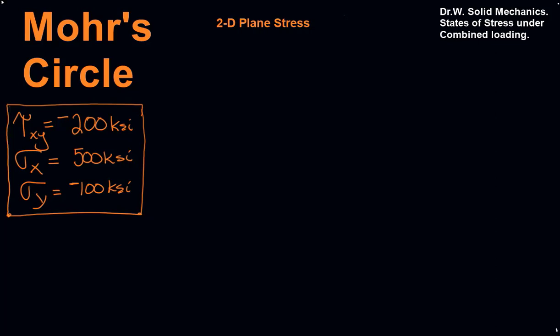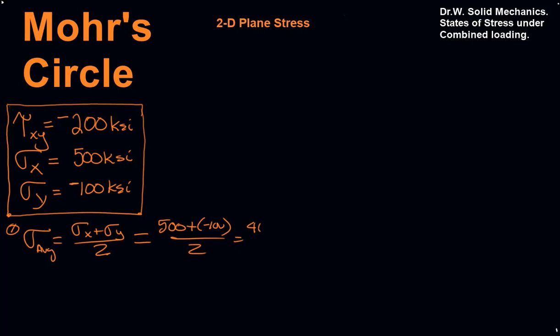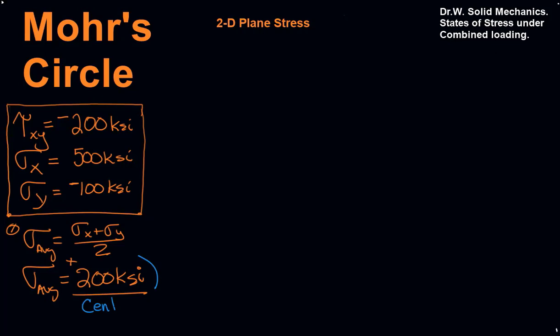Let's say we're given a tau x-y shear stress of negative 200 ksi, a stress in the x-direction of 500 ksi, and a normal stress in the y-direction of negative 100. Step one: find stress average, which is sigma x plus sigma y divided by 2 — just averaging the two numbers. That's 500 plus negative 100 over 2, giving 400 over 2, or 200 ksi. That becomes the center of our circle.